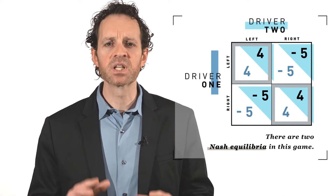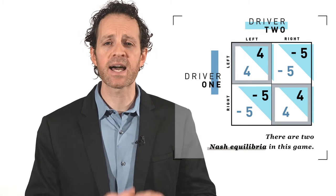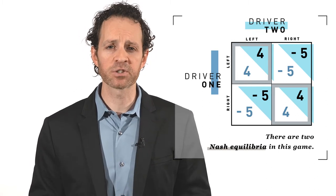For both of these outcomes, neither player can improve their situation by unilaterally changing their strategy. The central issue in these types of situations is determining mechanisms that allow people to coordinate on one of the two equilibria. How might two drivers both agree to drive on the right side? There are various mechanisms that could potentially work, and we'll discuss some of those in a bit.